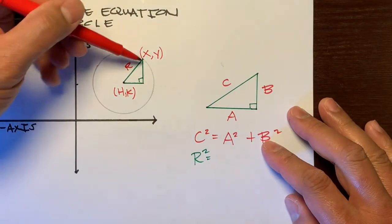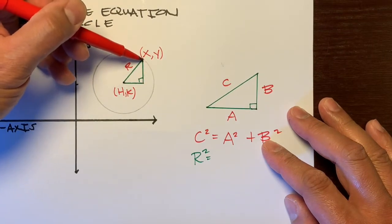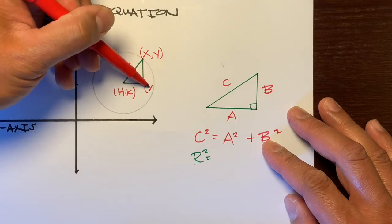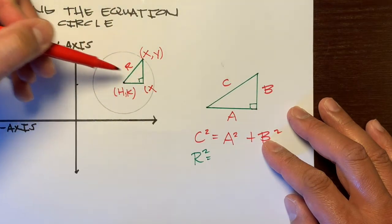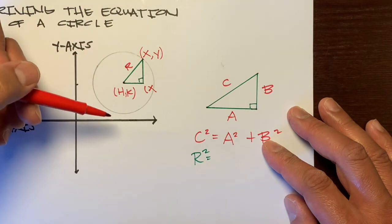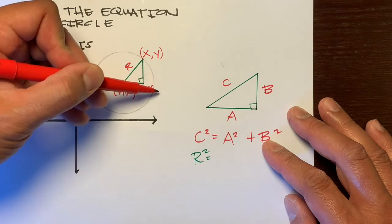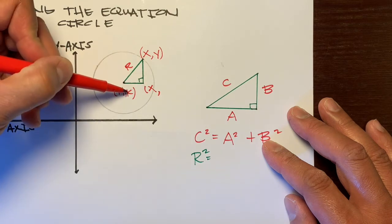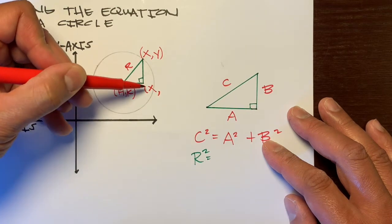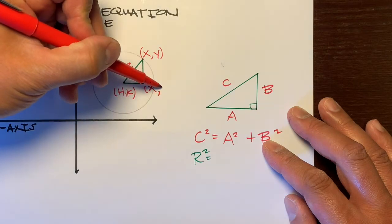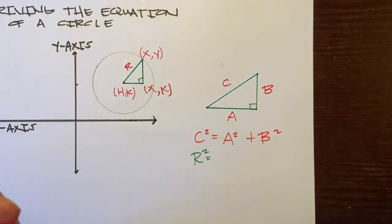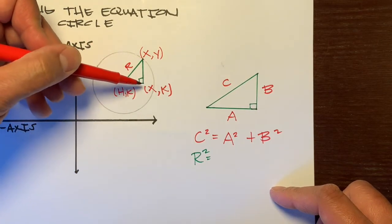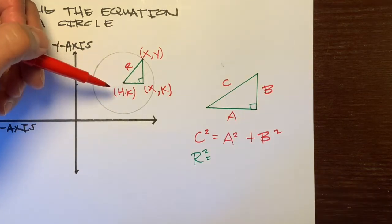We can figure out what this point is. If it's aligned with this point right here, this X value right here is actually just X, because it goes the same distance X away from there. And the Y value for this coordinate goes up K units.